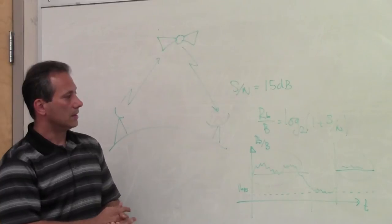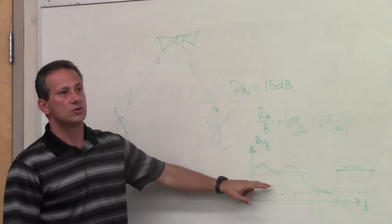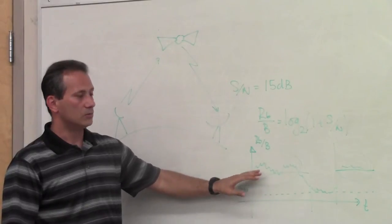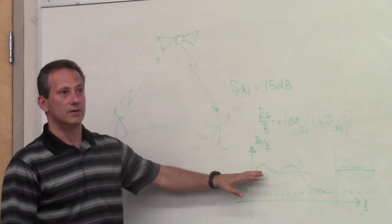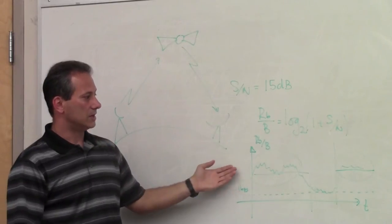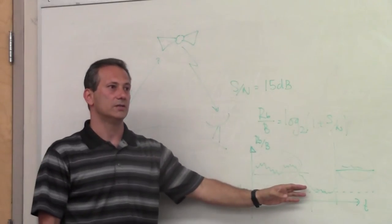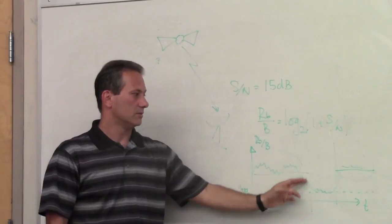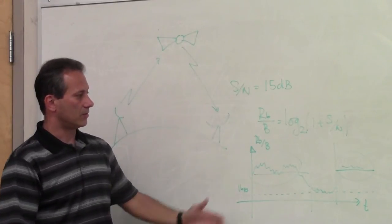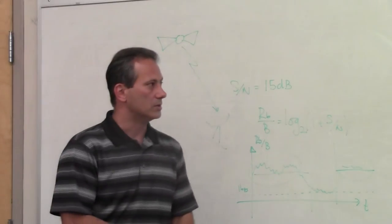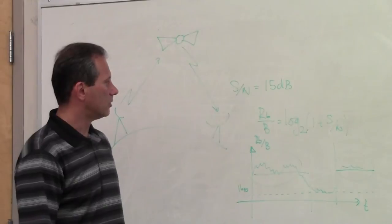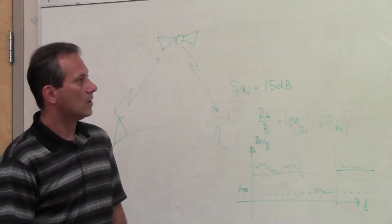In terrestrial systems we do this all the time — 3G and 4G phones do it many times per second. For satellites, the channel doesn't vary as fast, so these variations happen at a much lower pace, which makes it more manageable.